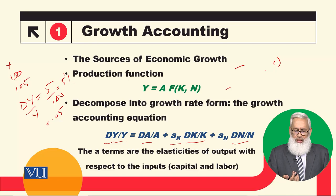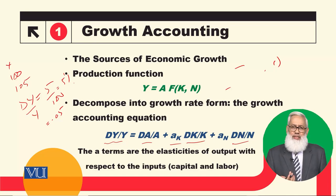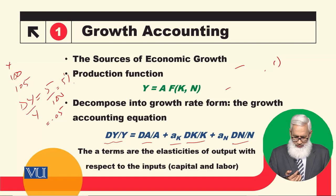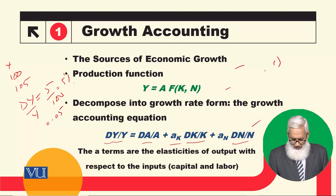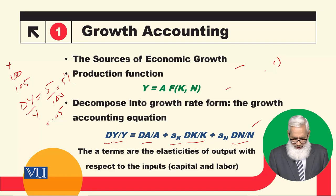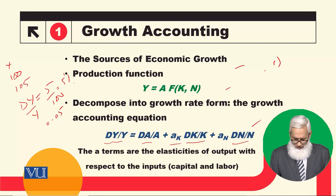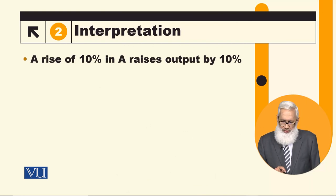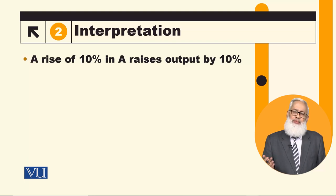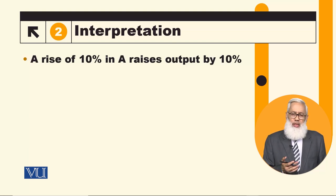Constant returns to scale means that if you increase labor and capital by 10%, then output will also increase by 10%. This is your production function written in the form of growth rates. So, the growth rate of output is equal to the growth rate of A, plus A_k times the growth rate of capital, plus A_n times the growth rate of labor.